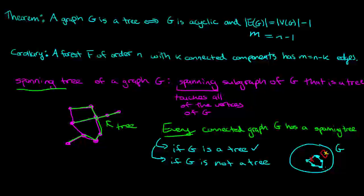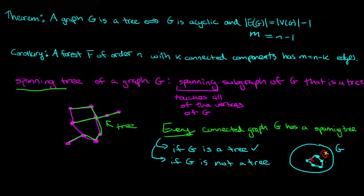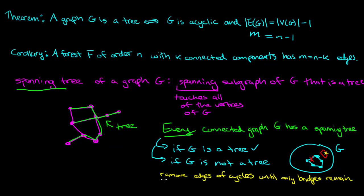You keep removing edges of cycles until you end up with something that is a spanning tree. You never remove vertices, so you're always keeping all of the vertices, but you just remove edges of cycles as necessary until all you have left are bridge edges. From the first video on trees, we saw that a connected graph is a tree if and only if all of its edges are bridges. So you end up with a graph which is a subgraph of G, has all the vertices so it is spanning, and is in fact a tree.